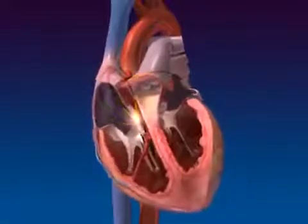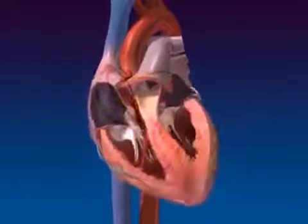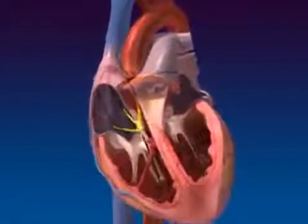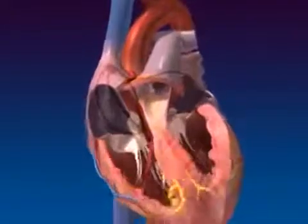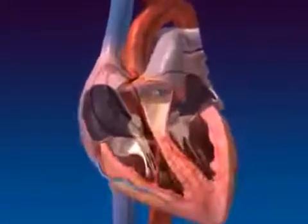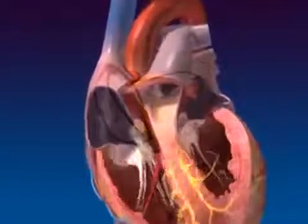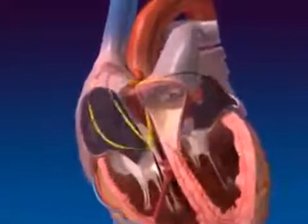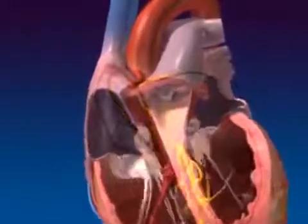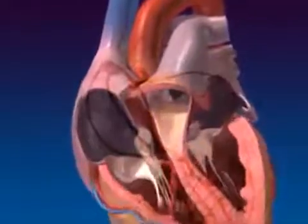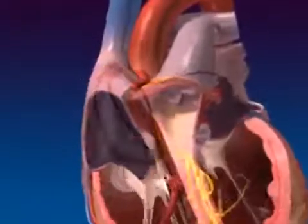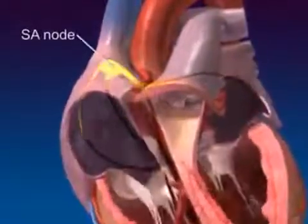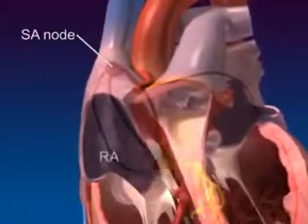Autorhythmic cells cyclically depolarize on their own, then fire an action potential each time they reach threshold — a process known as pacemaker activity. This activity originates from primary pacemaker cells in the sinoatrial, or SA, node in the upper right atrial wall.